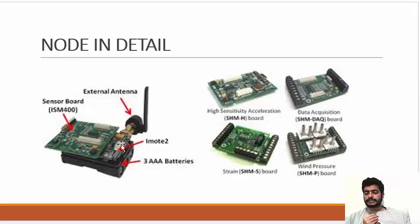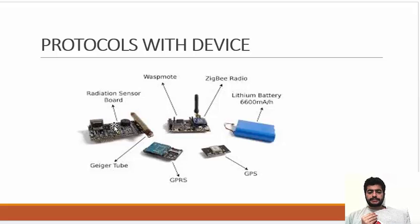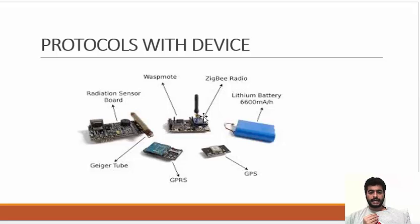I have shown you the wireless sensor nodes and will now present an example of how the sensor network works. Here is a radiation sensor board, and there are enhancements such as a GPS module and a lithium battery — if you want the wireless sensor to work 24/7/365, you use the lithium battery depending on usage. Here is a ZigBee radio if you want to catch an alternative frequency. This is called the VAST node, and the heading covers protocols with various devices.